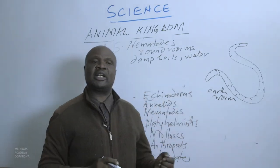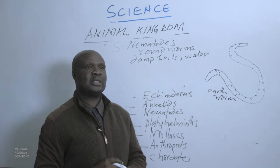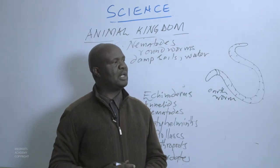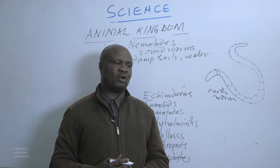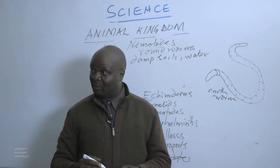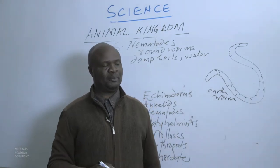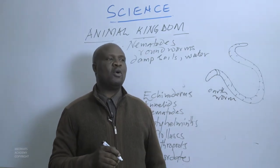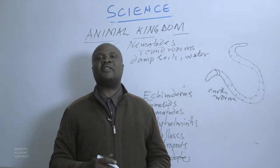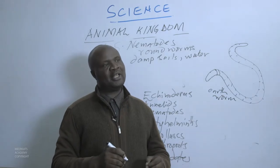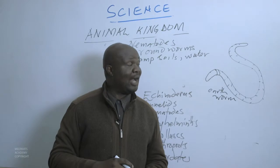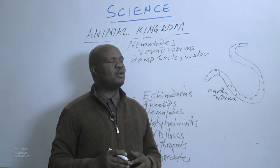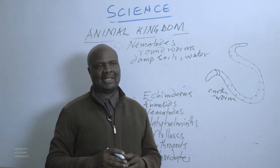Another unique characteristic of Nematodes or round worms is that they are parasites. Apart from existing in damp soils and water, they have the ability to exist on or within some animals. These animals they exist on are called hosts. They depend on these hosts for food, shelter, and everything, while the host gains nothing.